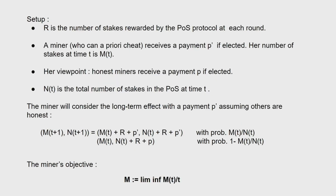Let me briefly go through the setup of my model. Up here is the reward per round. We consider an isolated miner who can prioritize transactions and she will receive the payment of P-prime if elected. I will call MT the total number of stakes she has at time T. In her point of view, honest miners will receive a payment of P if elected — so P-prime can be larger than, equal to, or smaller than P. We also introduce NT, which is the total number of stakes in the whole POS protocol at time T, so MT is smaller than NT.